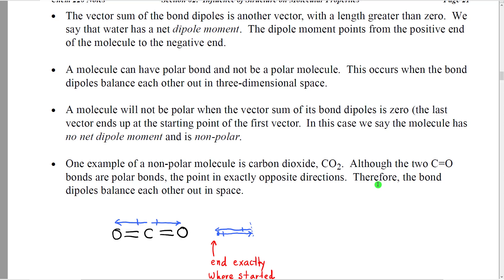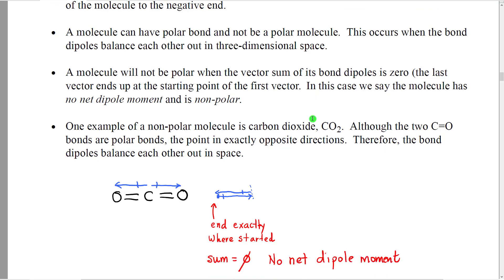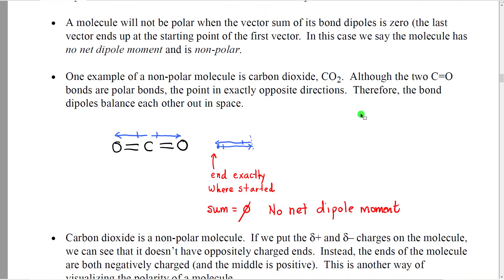The significance of geometry here is that molecules can have polar bonds but not be polar molecules. This occurs when the bond dipoles balance each other out in three-dimensional space. In other words, a molecule will not be polar when the vector sum of its bond dipoles is zero. This happens when all the vectors are lined up and the last vector ends up pointing back toward the very beginning of the first vector. In that case, we say the molecule has no net dipole moment and is therefore a nonpolar molecule.